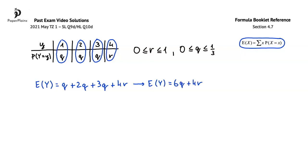To find a range of possible values for EY, we'll consider the extreme values for the ranges that we found for R and Q. One of the extreme cases is when R is 0. As we saw in question part C, in this case Q is 1 third. Substituting into the expression for EY, we get that it is equal to 6 times 1 third plus 4 times 0. Carrying out this calculation, we get that EY is 2.